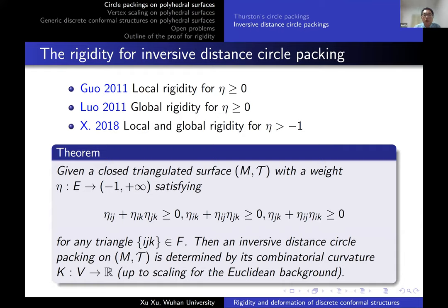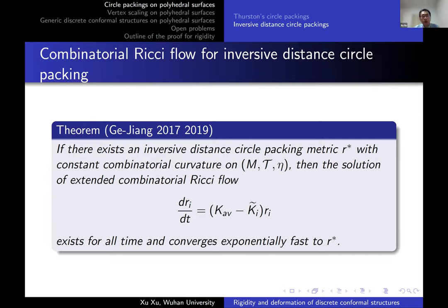For the rigidity of inversive distance circle packing: Guo proved local rigidity for non-negative inversive distance, and Luo further proved global rigidity for non-negative inversive distance. Recently, I proved local and global rigidity for inversive distance larger than minus one, under a structure condition. If the weight η is non-negative, the inequalities are satisfied automatically, but this condition allows some η_ij to be negative, thus generalizing the result of Guo and Luo.